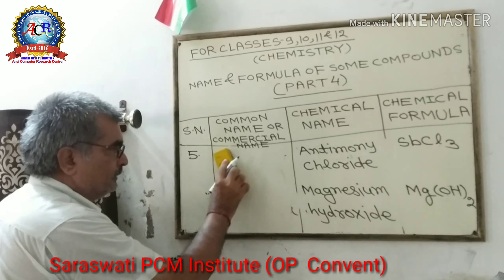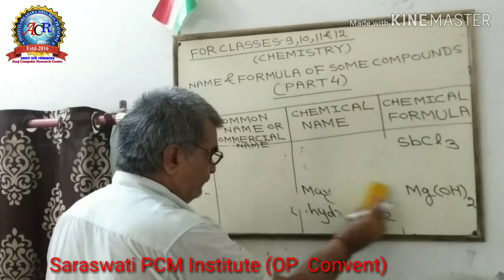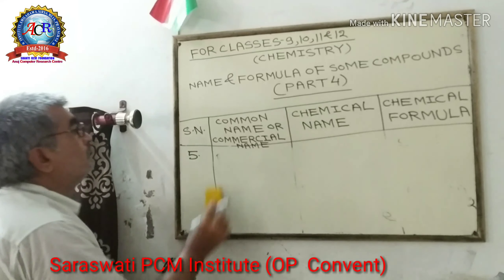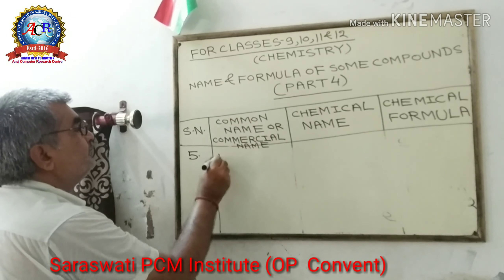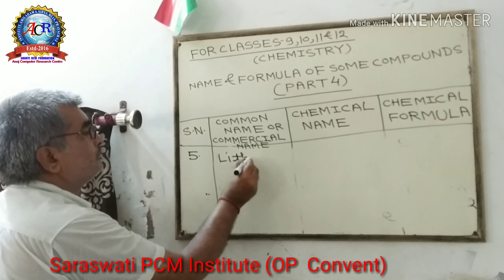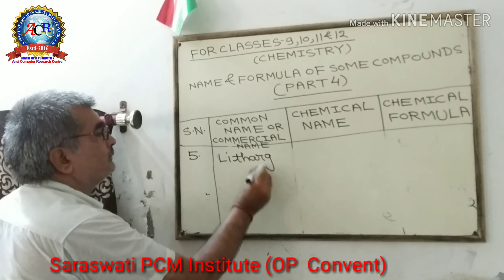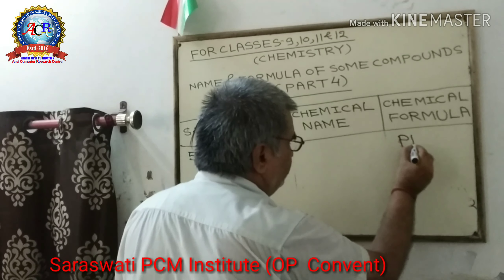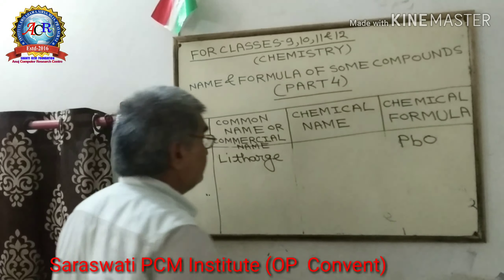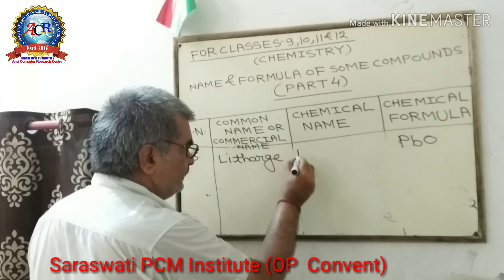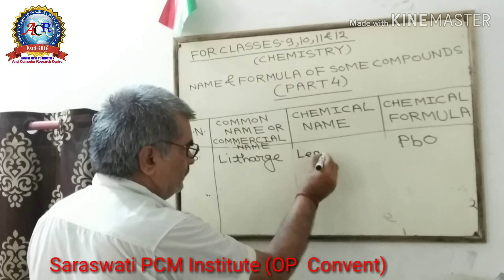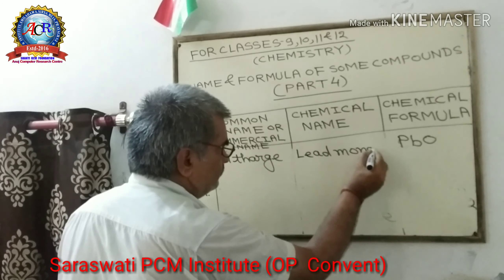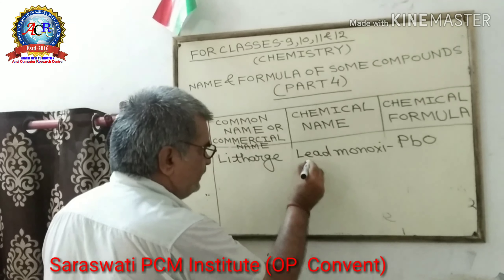Fifth: Litharge. Its chemical formula is PbO. Its chemical name is Lead Monoxide.